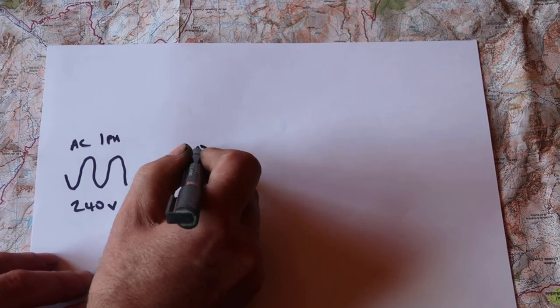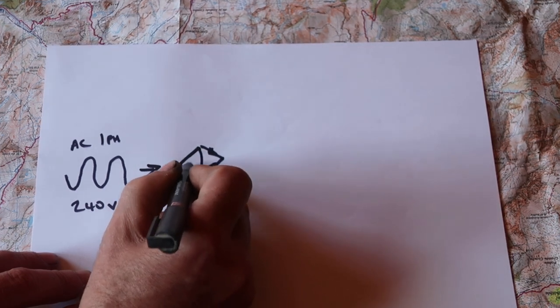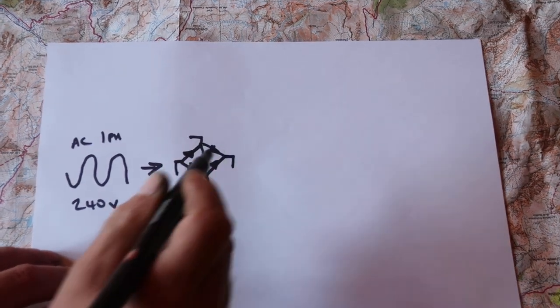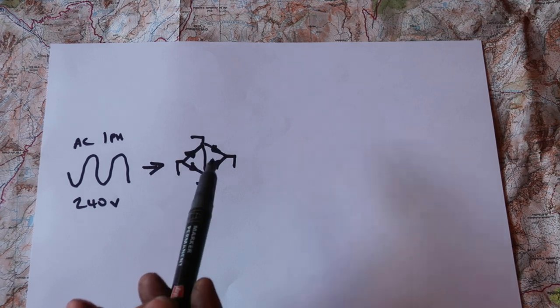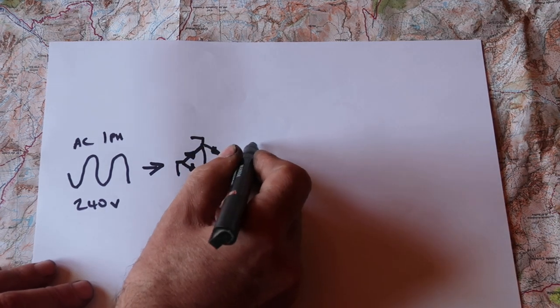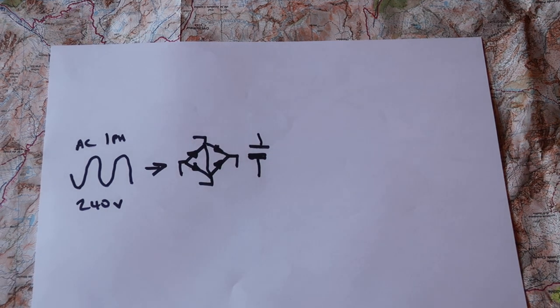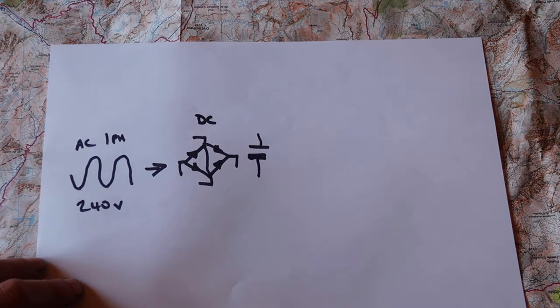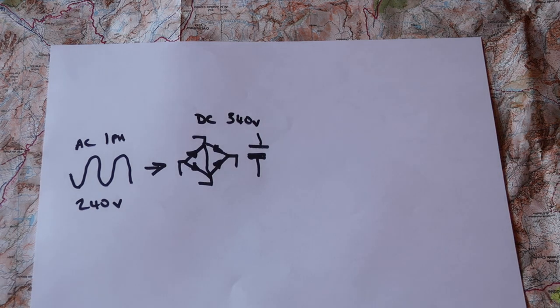Your VFD takes that and goes through a full bridge rectifier and some capacitors. That turns this into DC, 340 volts or thereabouts.